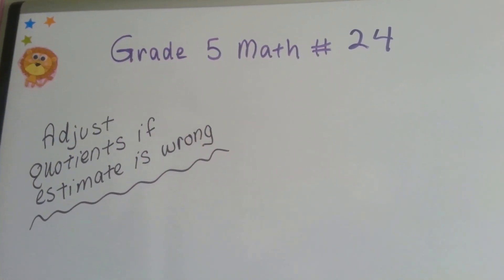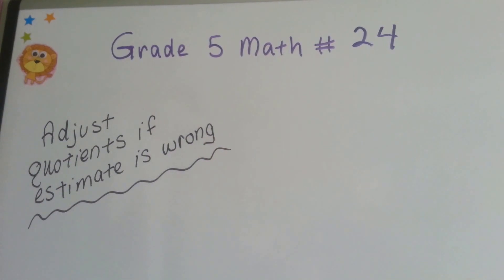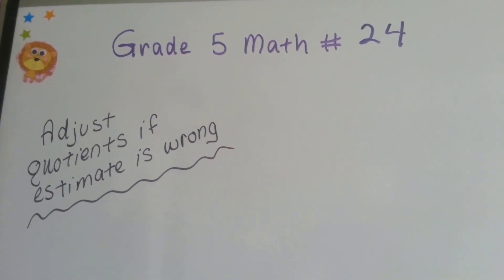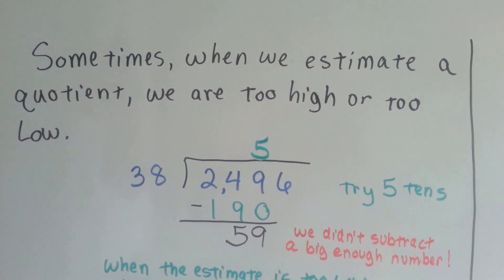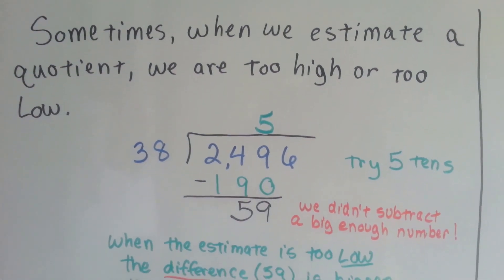Grade 5 math number 24. Adjust quotients if the estimate is wrong. Sometimes when we estimate a quotient, we are too high or too low.